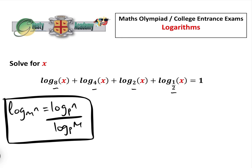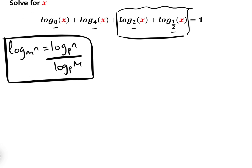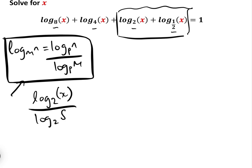I'll do it the traditional way, but afterwards I'll show you a little trick where we can simplify that. So let's change all of these. Log to the base eight of x — using this formula and changing it to log base two — log to the base eight of x is log to the base two of x over log to the base two of eight.